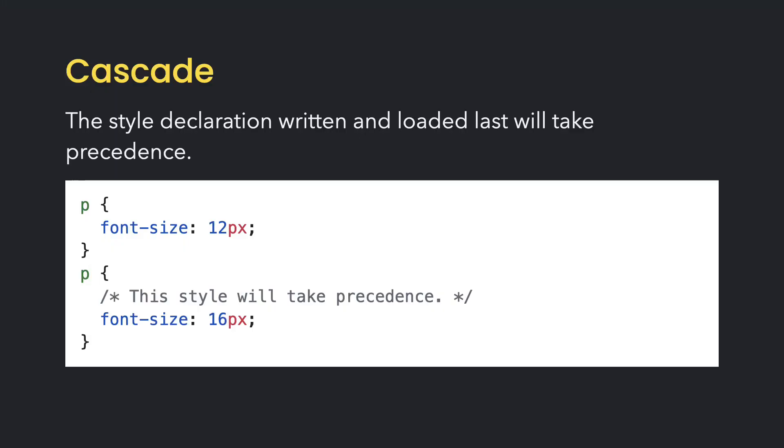Style sheets are read from top to bottom by the browser. So the cascade in cascading style sheet refers to how style rules are applied based on the written order of the style declarations. If two rules are applied to the same element, the declaration that was written last will override the previous declaration and take precedence.